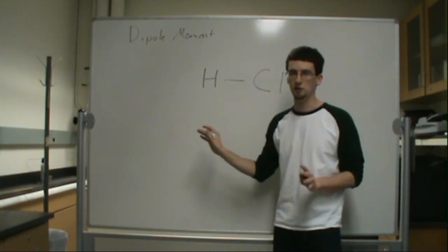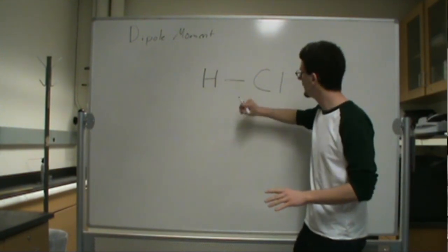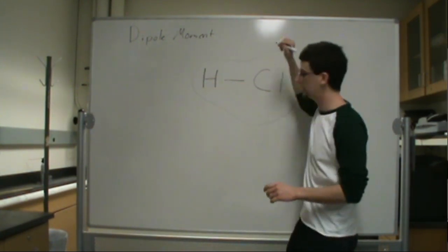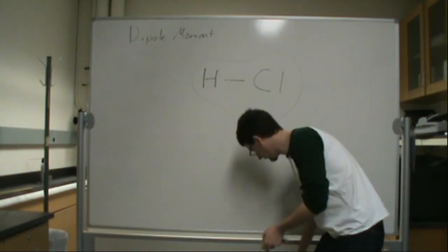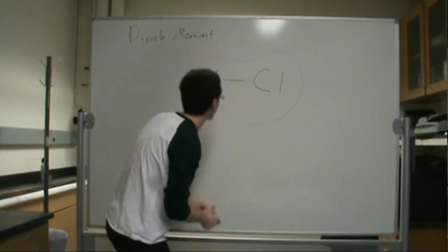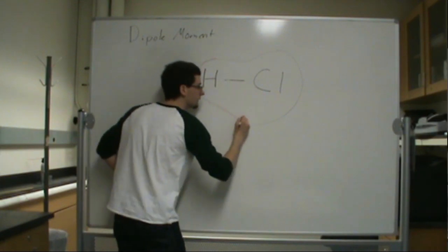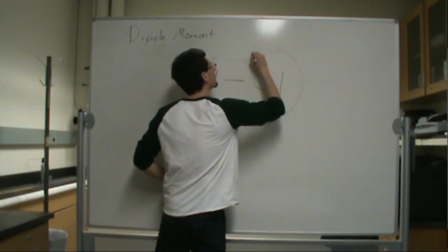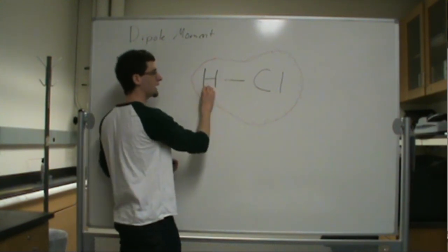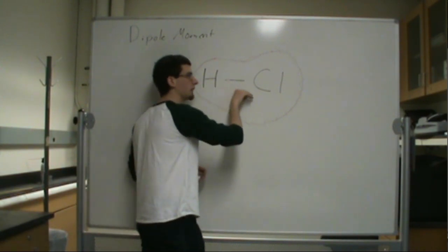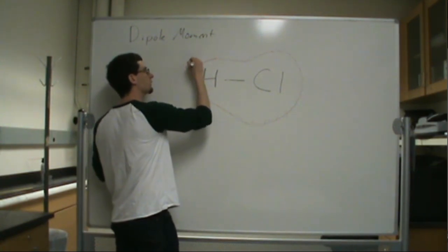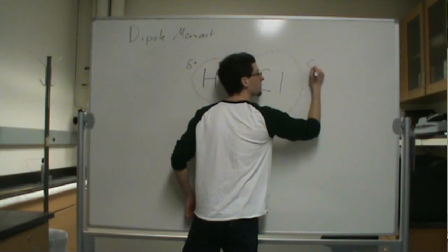So, if we were looking at the charge or the electron density around this guy, it would look something kind of like that. And what would end up happening is, since chlorine is more electronegative than hydrogen, it would sap some electron density away from the hydrogen, leaving a partial positive charge and a partial negative charge.